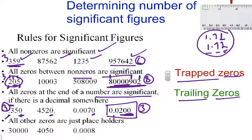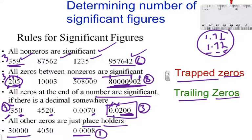These two zeros in front are not significant, based on the last rule — they're called placeholder zeros, and placeholder zeros are not significant. So these zeros are all not significant, so this number in the back has only one significant digit. This number in front also has only one significant digit, which is the 3 — these are trailing zeros but there's no decimal, so they're not significant.